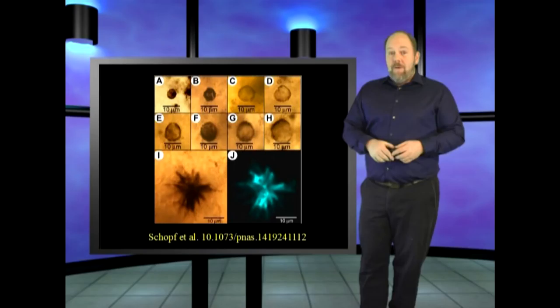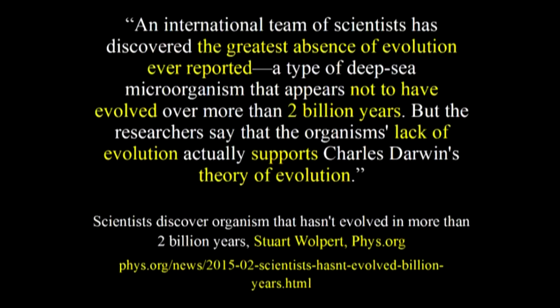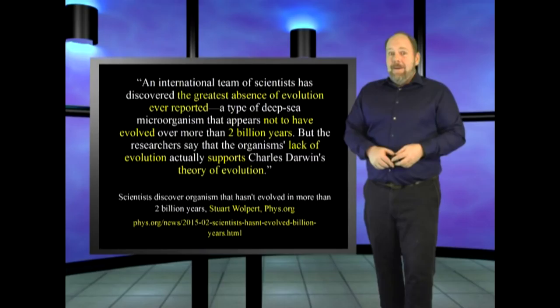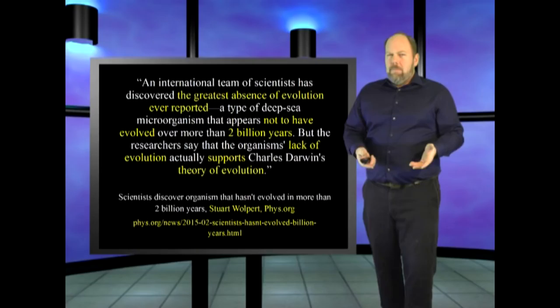In response to this very nagging question, phys.org presented one of the most profound oxymorons ever stated in earth's history in writing. They have evolved over more than 2 billion years, but the researchers say that the organism's lack of evolution actually supports Charles Darwin's theory of evolution. Really? So the greatest absence of evolutionary change is proof of evolution? That's like saying the greatest absence of alchemy is proof of alchemy. Come on guys, you're smarter than this! Aren't you?